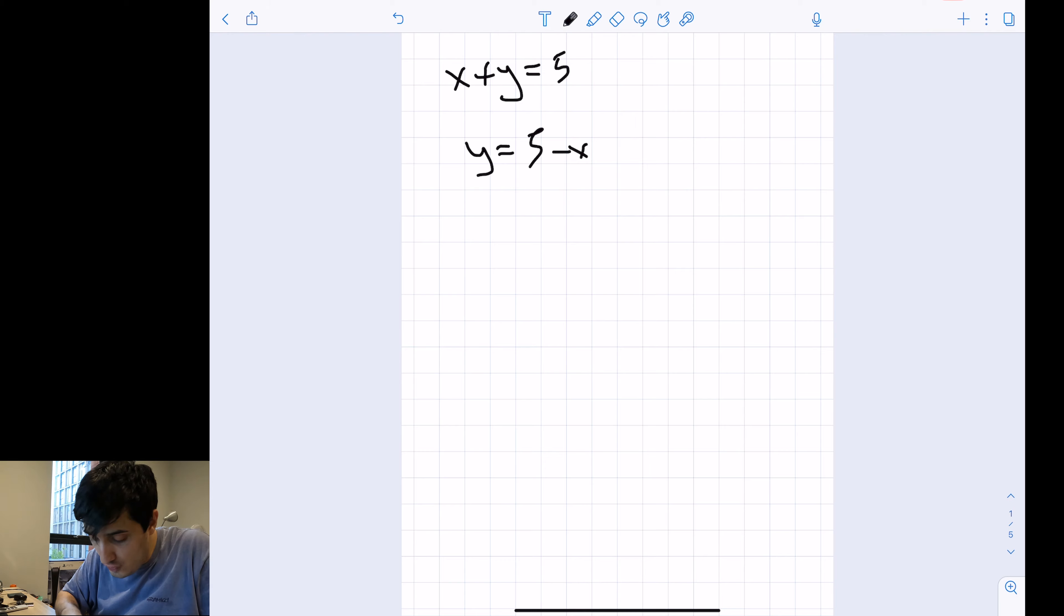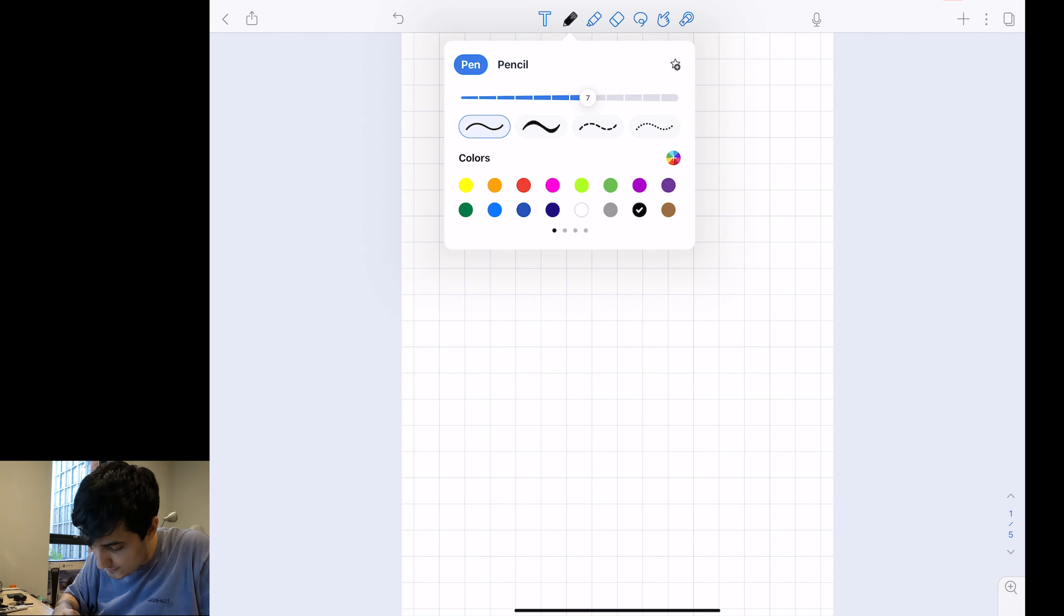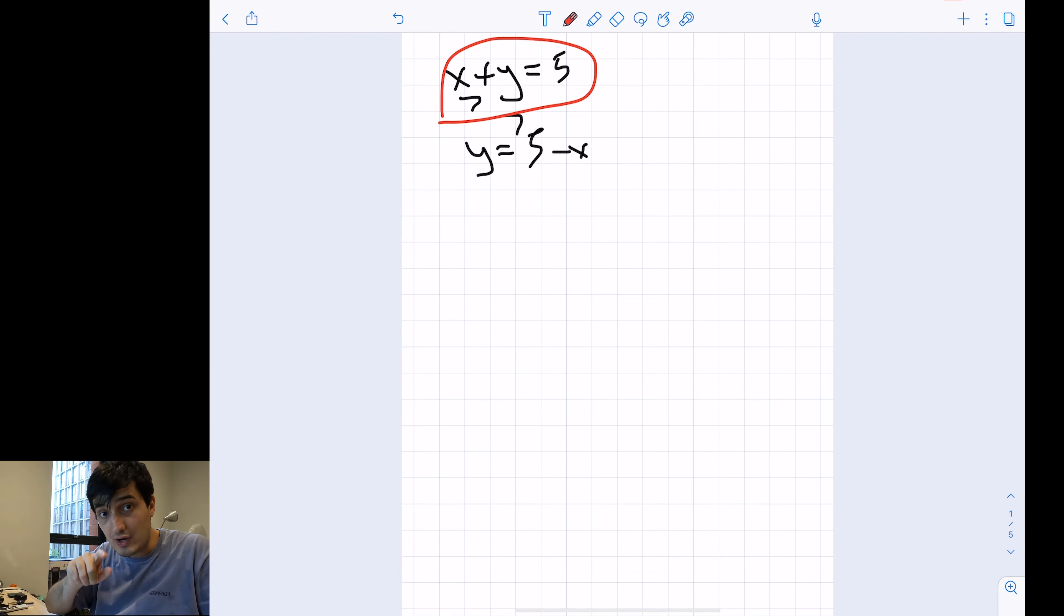The most important thing to understand is that if we have two unknowns and one equation, you cannot solve it. If I also give you something like y equals 3, then you can easily solve it. You're going to put 3 into y, you will have x plus 3 equals 5, so x will equal 2.